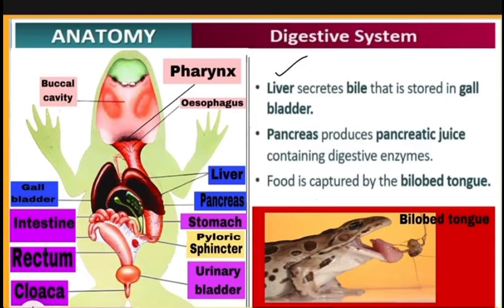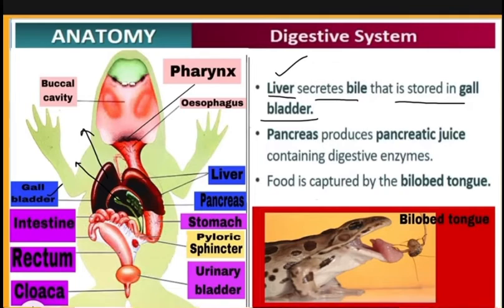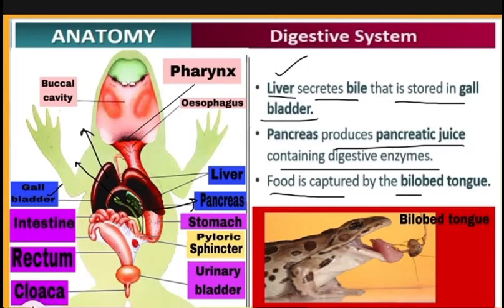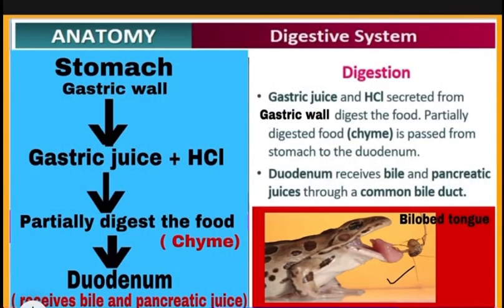The digestive glands include the liver, which secretes bile stored in the gallbladder, and the pancreas, which produces pancreatic juice containing digestive enzymes. Food is captured by the bilobed tongue and passes through the esophagus into the stomach.